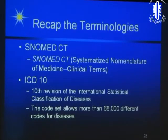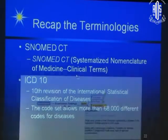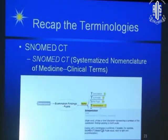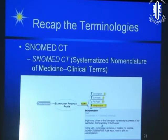SNOMED CT is actually a nomenclature in medicine. You have the ICD-10 — most of us know ICD-9 which we have been using, and now they are transitioning into ICD-10. SNOMED CT is pretty interesting — have a look at this: 'the pupils are equal, they react to light and accommodation.' You can see the number — if you put this number, it automatically says that is what it is. Basically, SNOMED CT is the actual information capture and ICD-10 is your diagnosis.